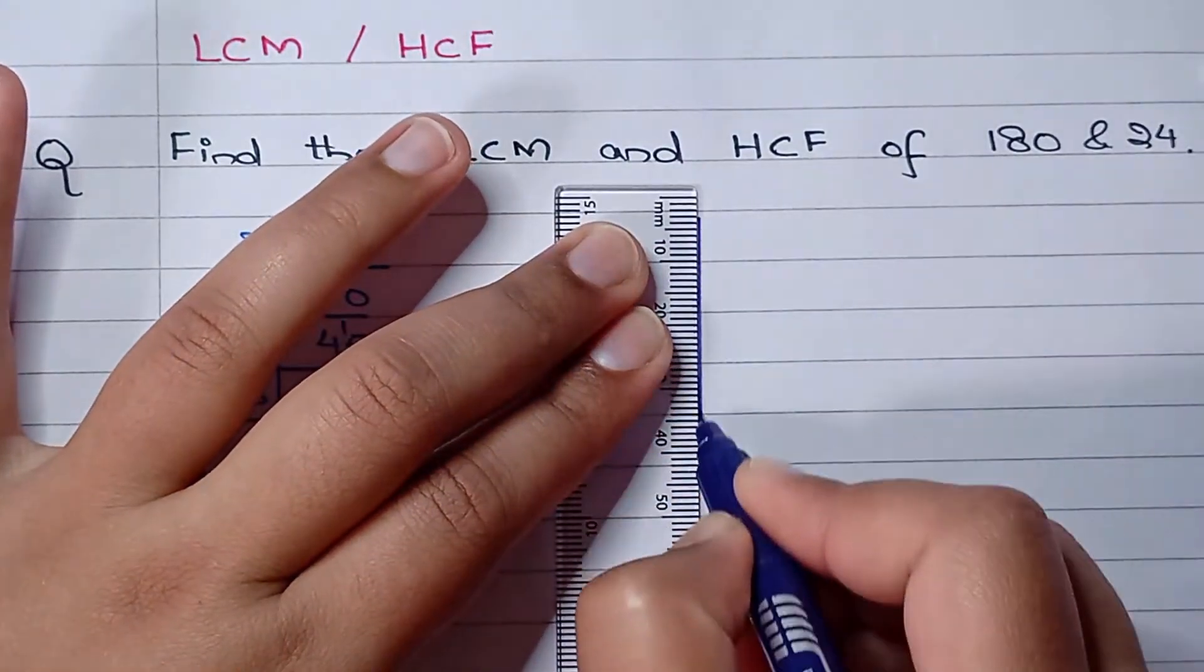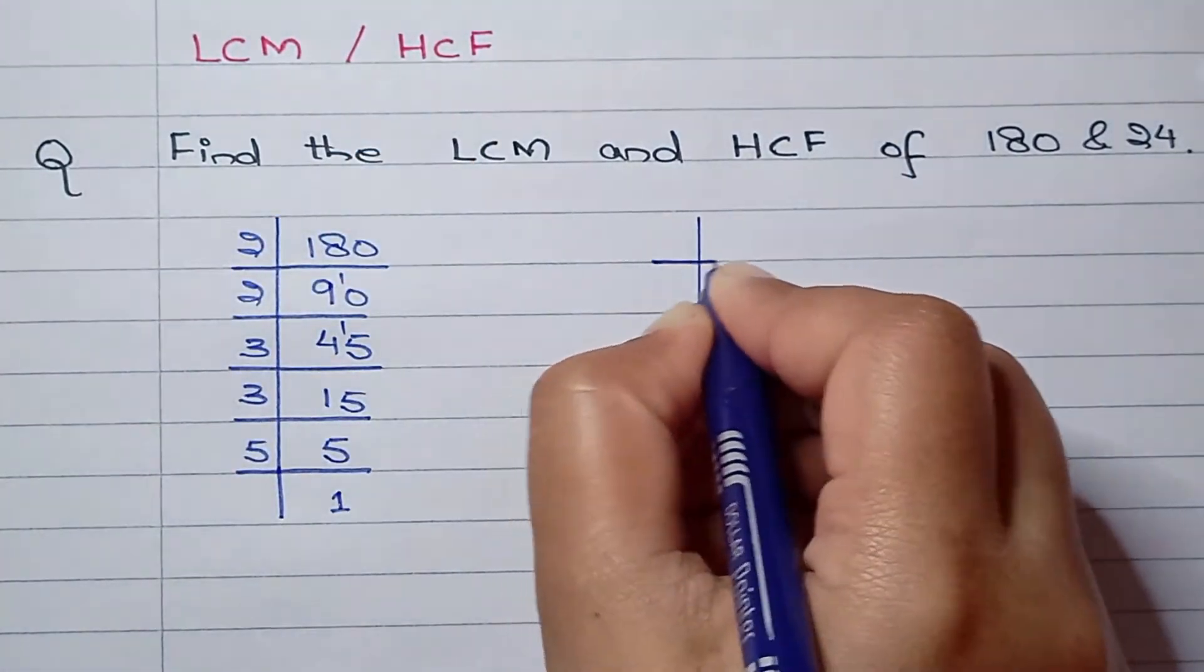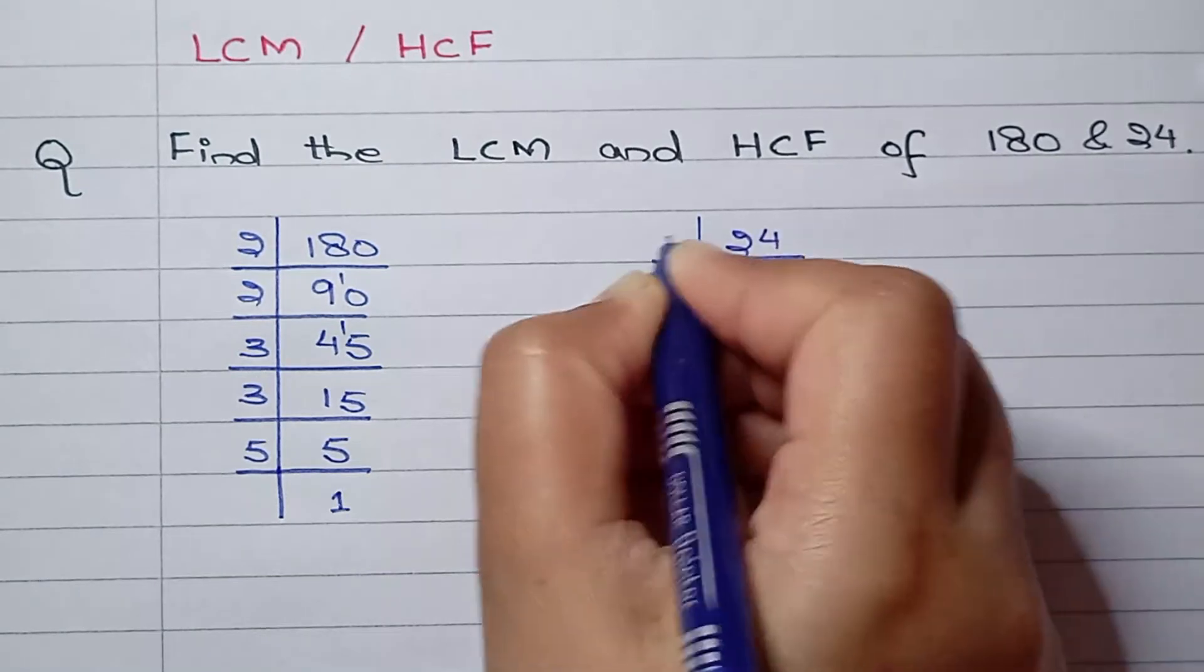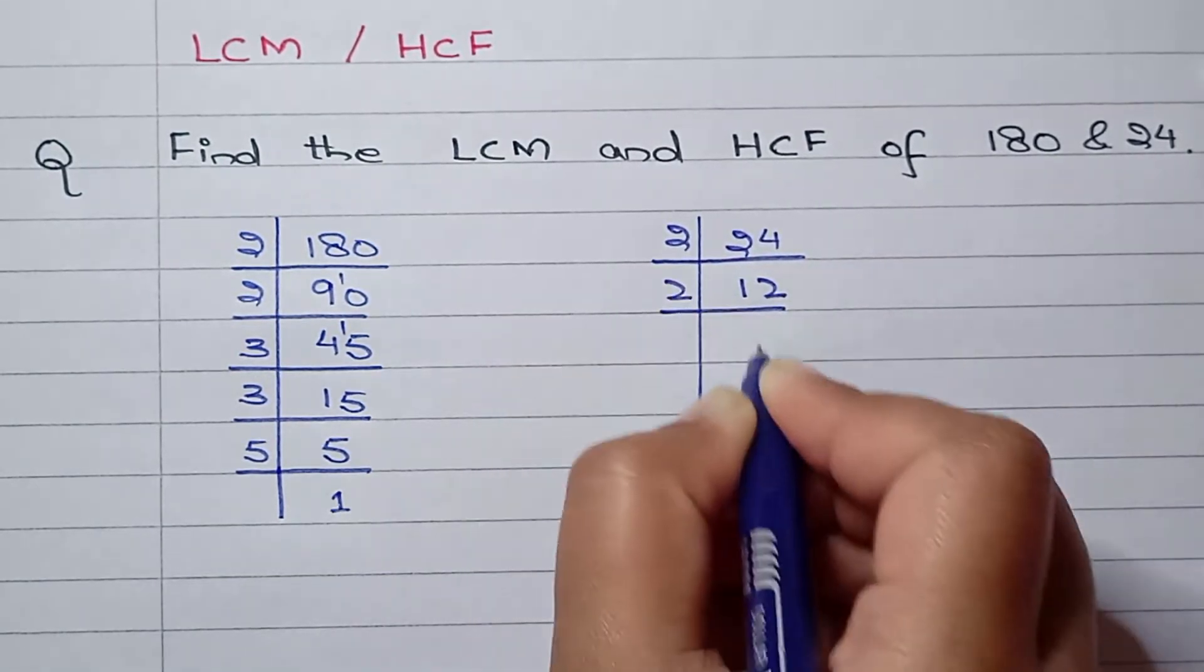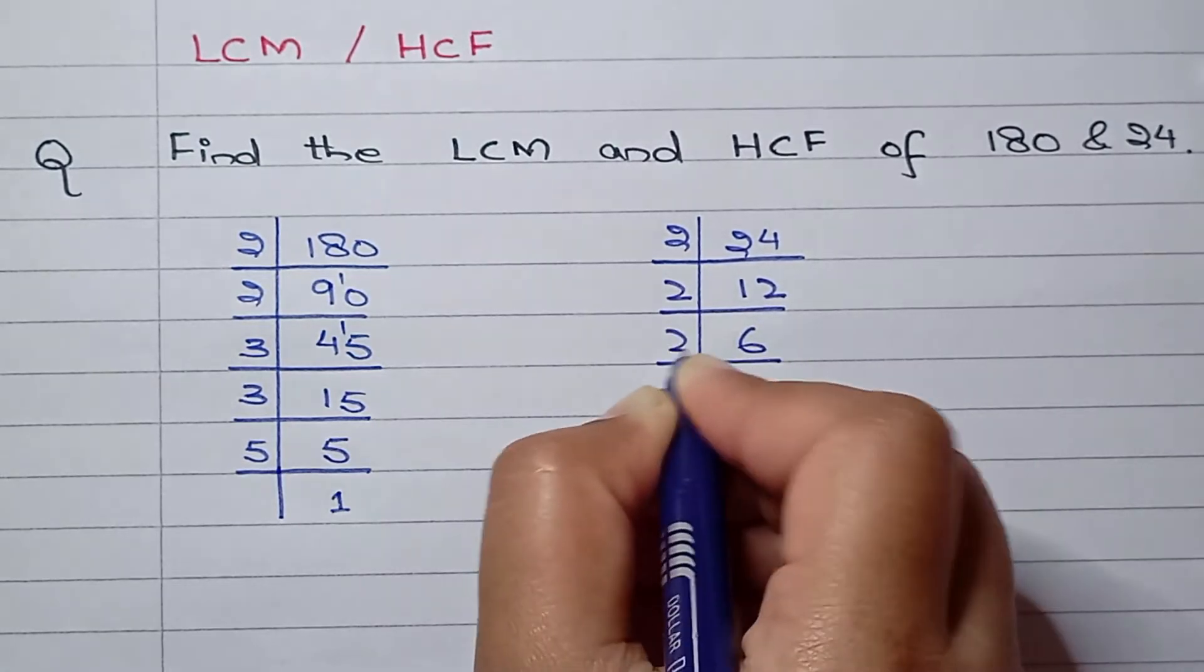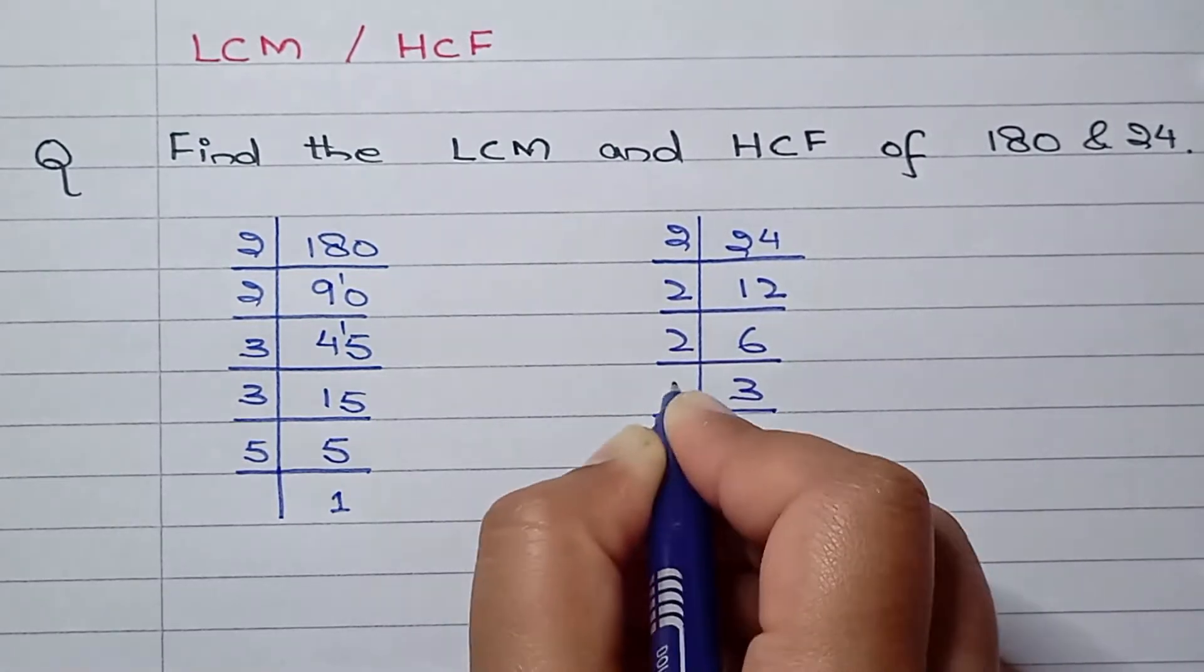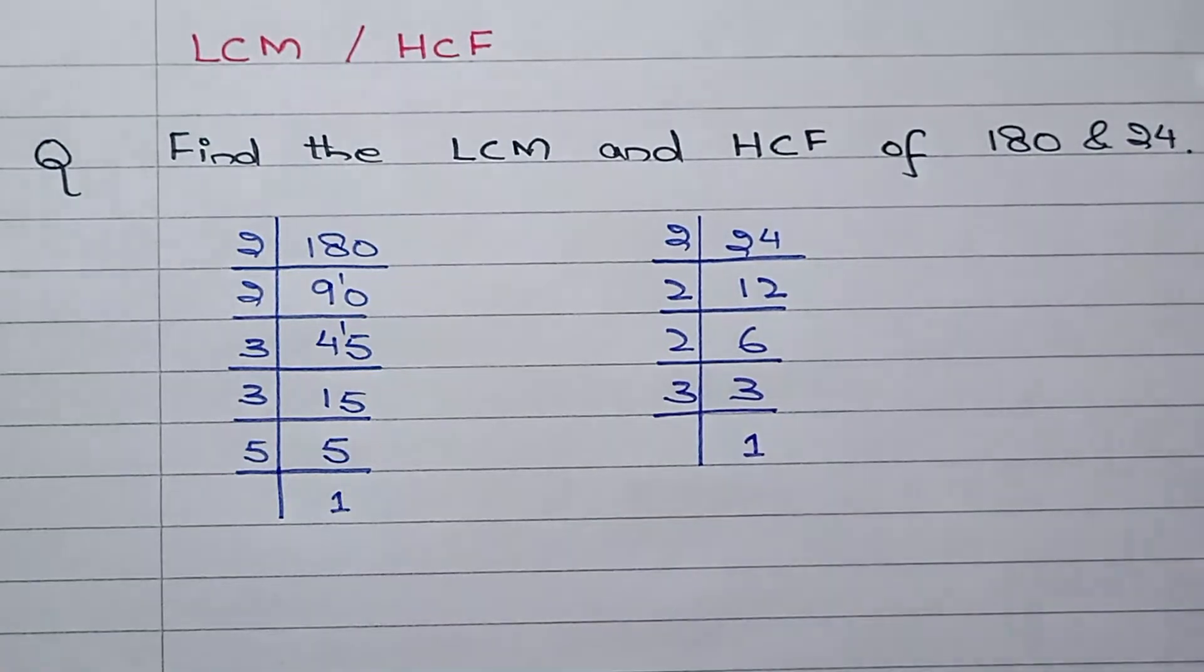Now let me do for 24 as well. For 24 we have 2 times 1 is 2, 2 times 2 is 4, 2 times 6 is 12, 2 times 3 is 6, and 3 times 1 is 3.